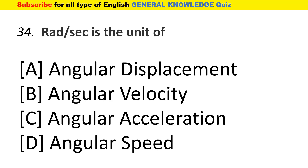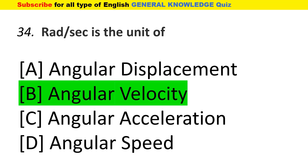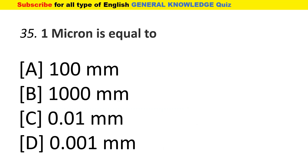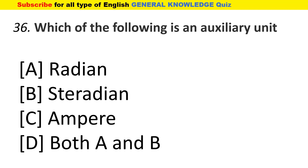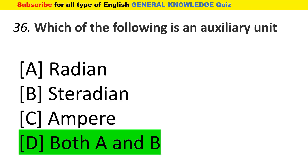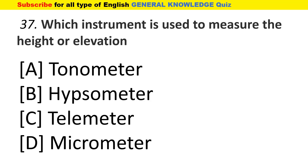Radian per second is the unit of angular velocity. One micron is equal to 0.01 mm. Which of the following is an auxiliary unit? The answer is both A and B. Which instrument is used to measure height or elevation? The answer is hypsometer.